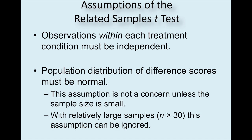Some of the assumptions. Again, observations within each treatment must be independent. And the population distribution of those different scores must be assumed to be normal or come from a normal distribution. And again, if you're nervous about that, pump up your sample size. Get your sample size above 30.